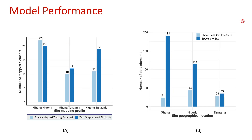These are some of the results of the model performance on harmonizing the SickleInAfrica data from three sites: Ghana, Nigeria, and Tanzania. Figure A shows model-suggested shared-based matches between sites, and text graph-based similarity search with a similarity threshold set at 0.7 had the best performance. Figure B shows the total number of harmonized data elements between the three research sites.